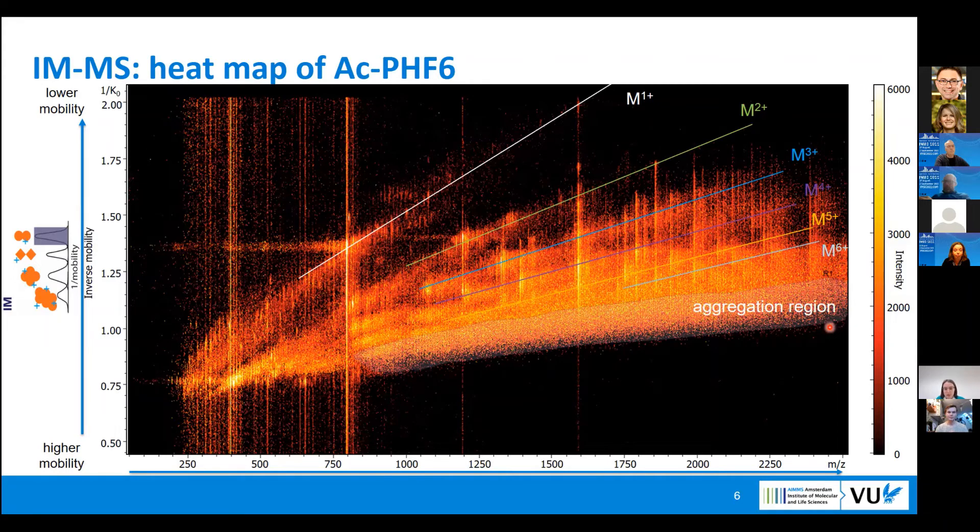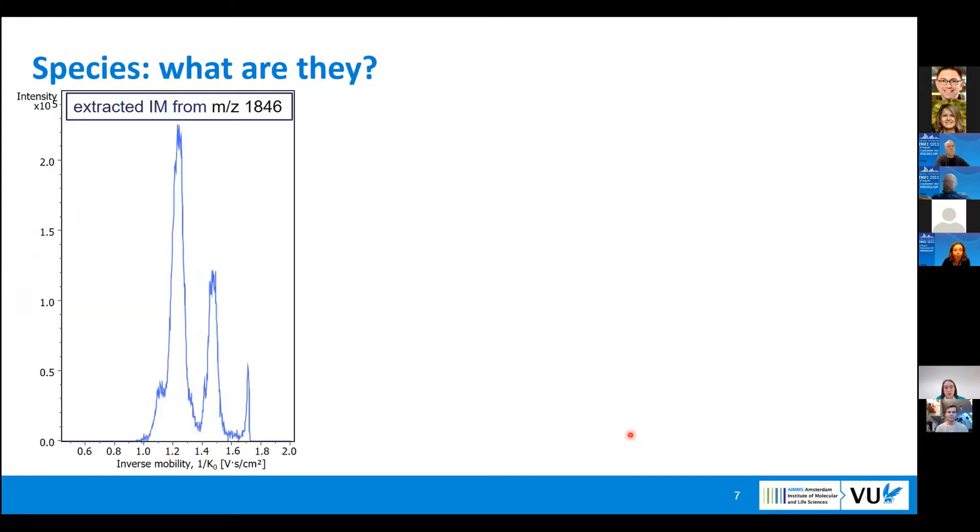For further analysis, I will focus on this particular m/z value to characterize the species that are present there. How we analyze this: we want to know what species are present. We extract ion mobility from this m/z value and we end up with three peaks.